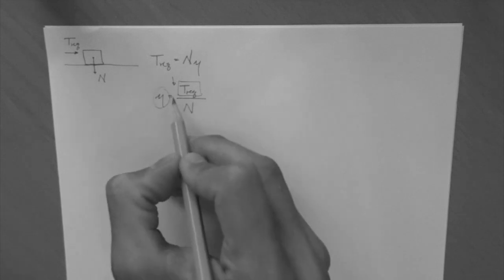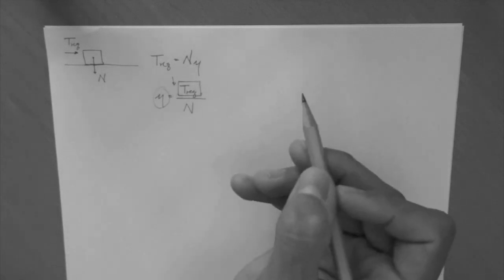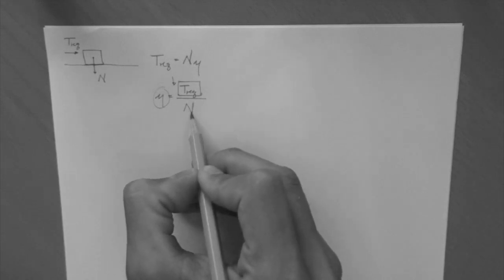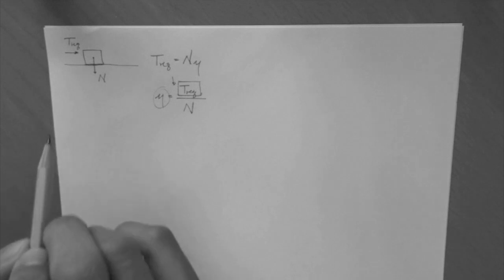So, the coefficient of friction is the relationship between the strength of the system and the normal force, in this case, acting on the interface.